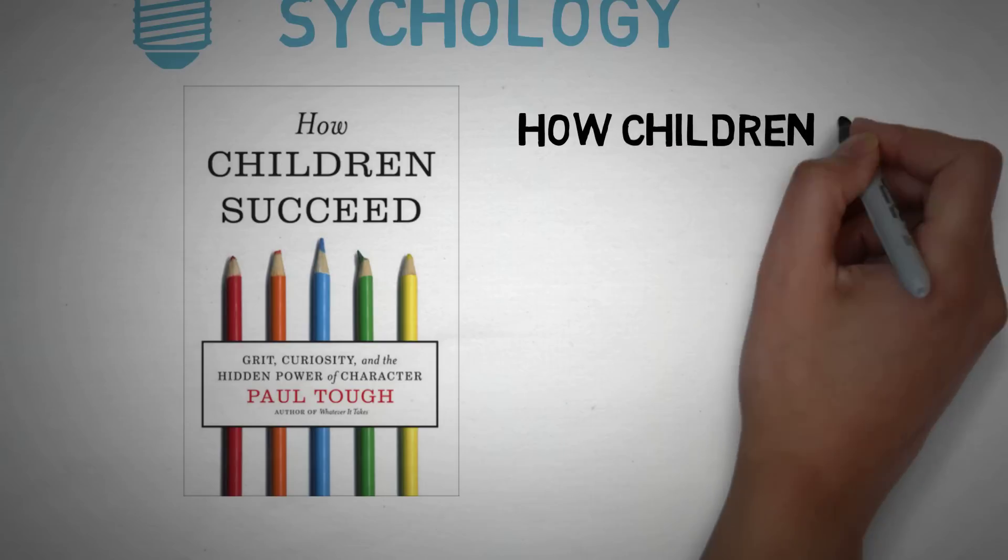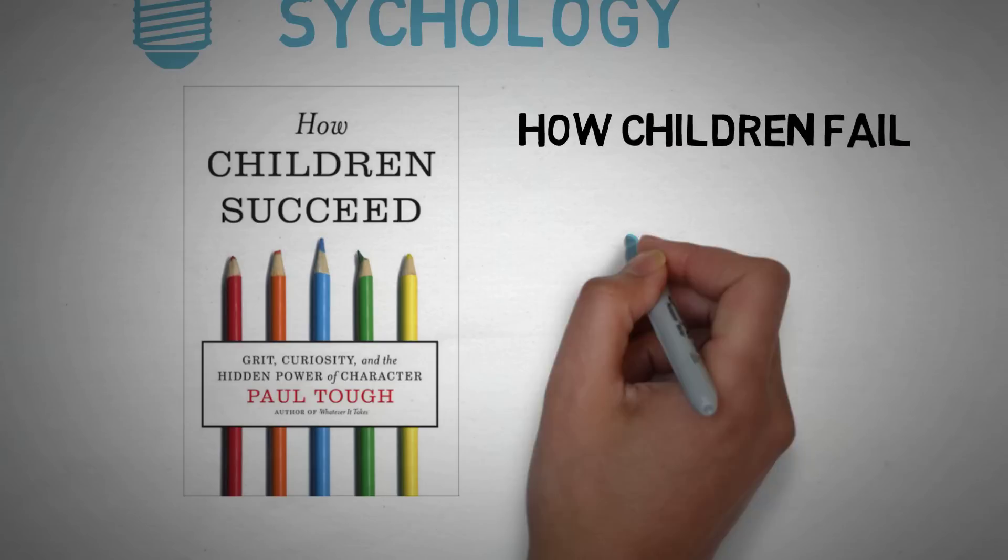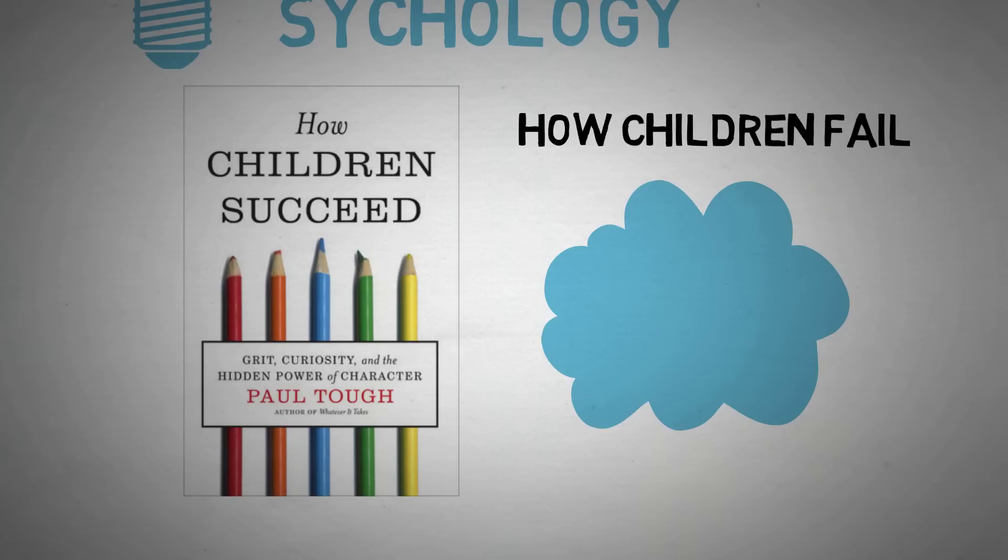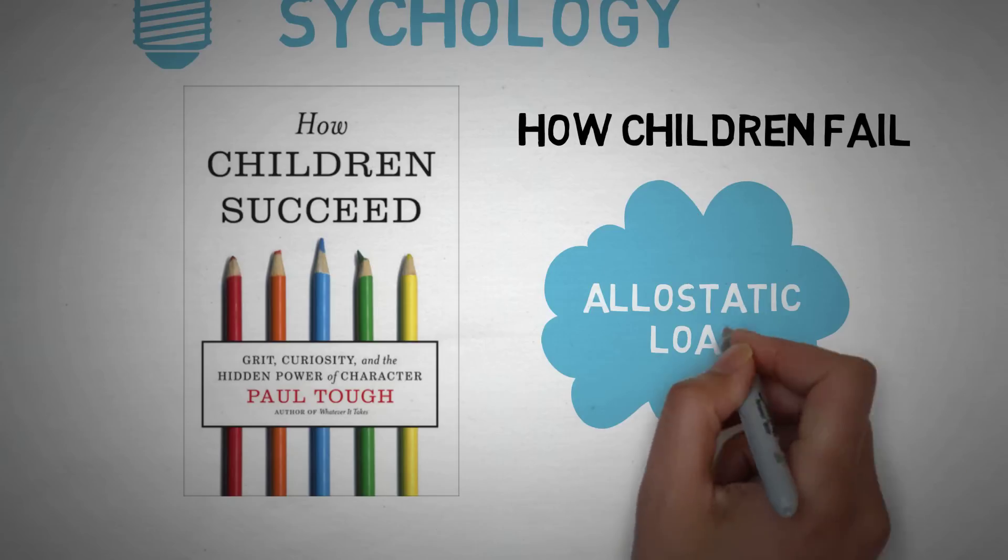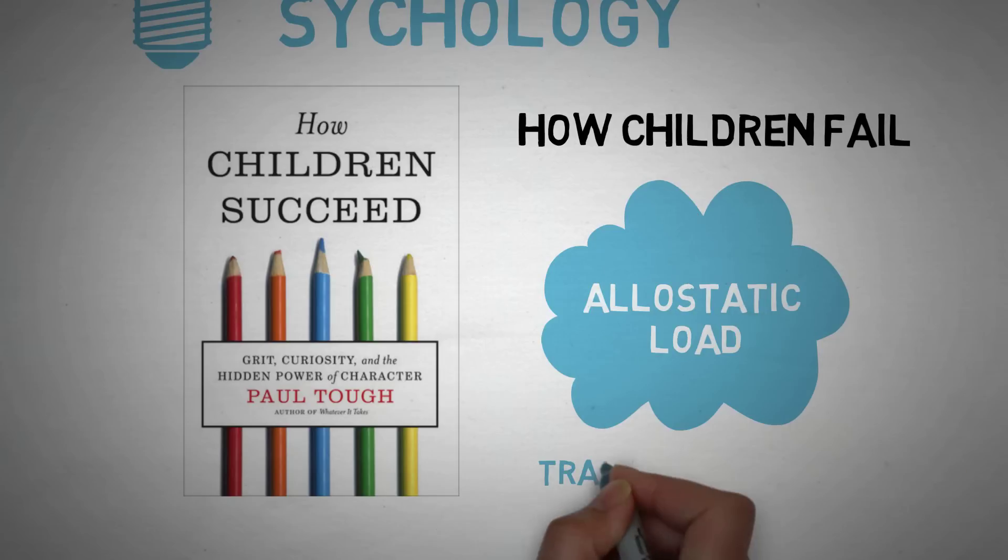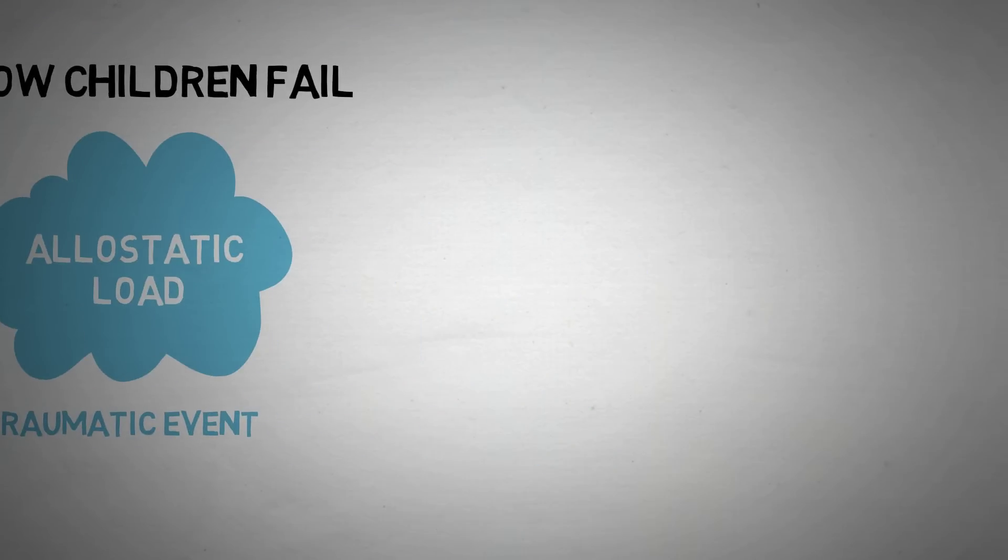The first chapter goes over how students and how children fail. He says that students with a higher allostatic load fail more often. An allostatic load is basically a measure of stressful and traumatic events in a child's life.